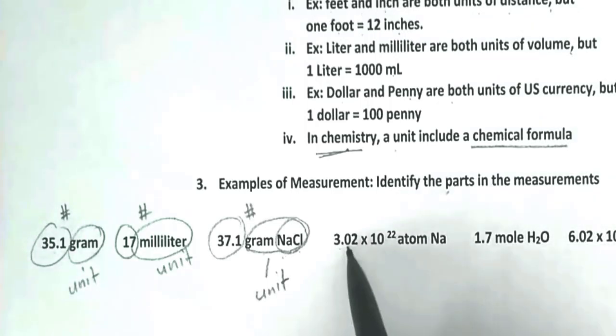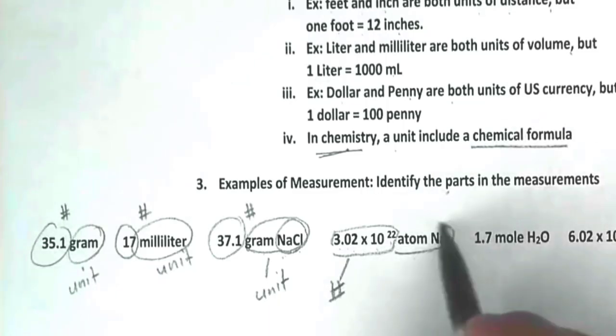Then we have 3.02 times 10 to the 22, or 22nd power, atoms of Na, which is sodium. So this whole entire thing right here, that would be a very large number, but it's still the number part of a measurement. Then atoms of NaCl, that would be the unit.